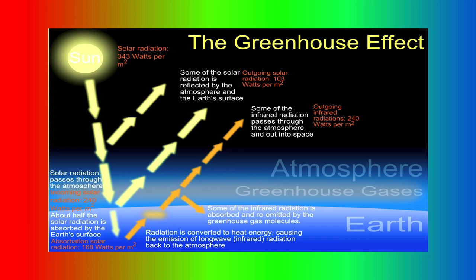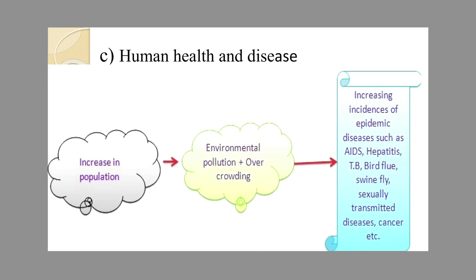That is what we call global warming. The next ill effect of man-made ecosystems due to industrialization is the effect on human health. The increase in population is leading to environmental pollution and overcrowding. As a result, there is increased incidence of epidemic diseases such as AIDS, hepatitis, bird flu, swine flu, cancer, etc. All these diseases are reported at higher magnitude from congested populations because not only are these areas congested, but free air supply is also restricted and malnourished populations normally reside there.